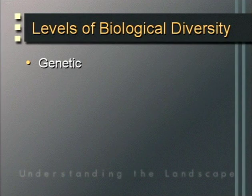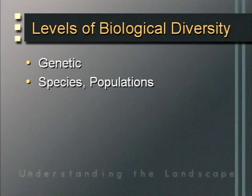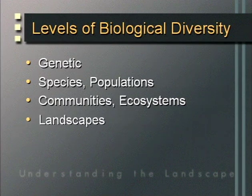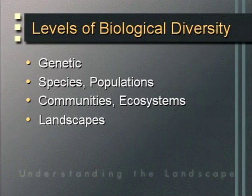In 1990, Reid Noss proposed a hierarchical approach to monitoring and managing biodiversity in Conservation Biology, identifying four basic levels: first, the genetic level; second, the species and population level; third, the communities and ecosystems level; and finally, the landscape level. All four levels need to be considered when conserving and managing biological diversity, and private landowners are an important component of these conservation practices.